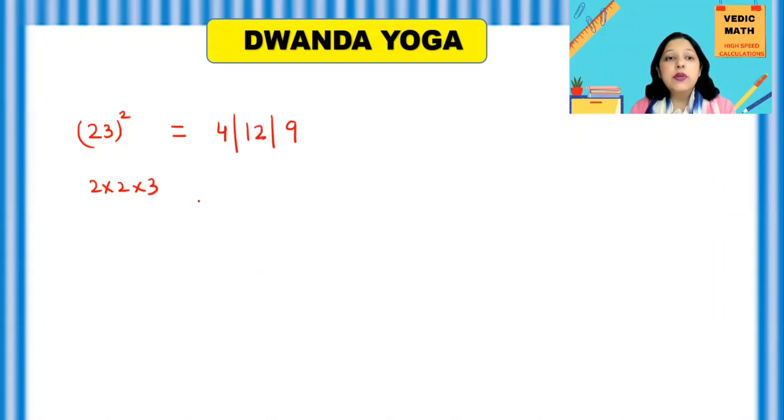Now when you are writing the final answer, one thing you have to keep in mind that there should not be any 2 digit number at these 2 places. If you are getting a 2 digit number at these 2 places, you have to shift the 10th place to the left side. So here you will write 9 as it is, 2 as it is.